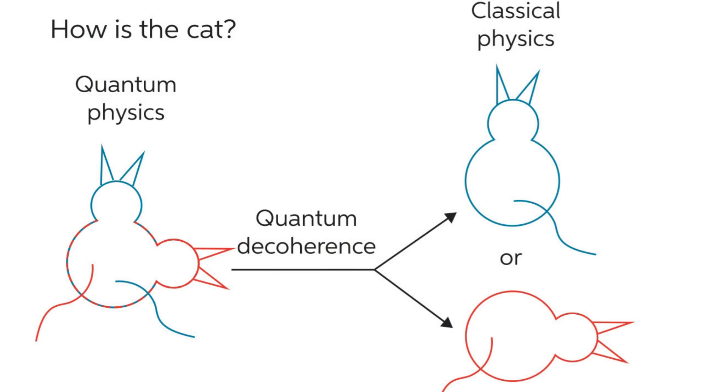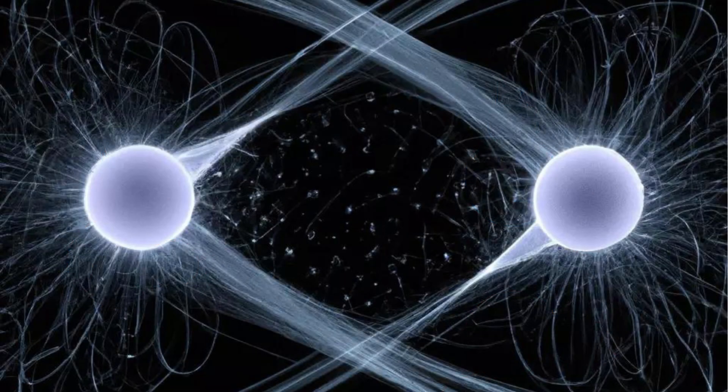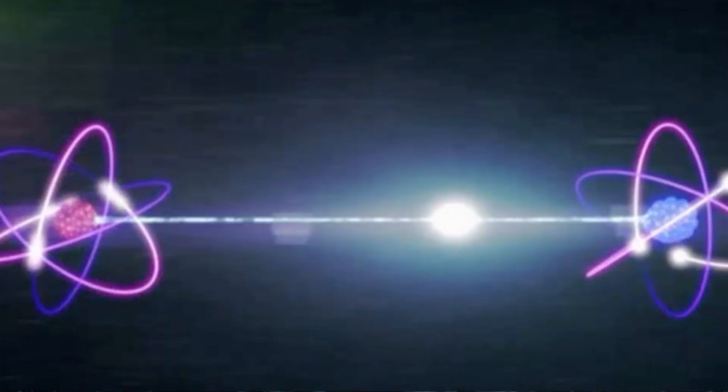Next, we have quantum entanglement, a phenomenon where particles become interconnected. The state of one entangled particle immediately affects the state of the other, no matter the distance between them, challenging our understanding of space and time.